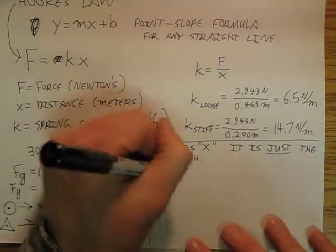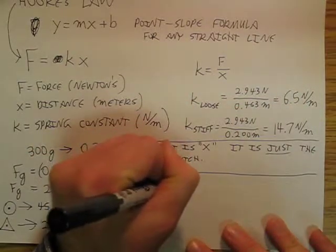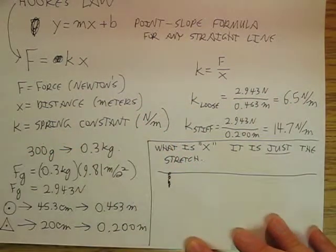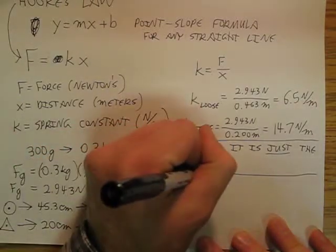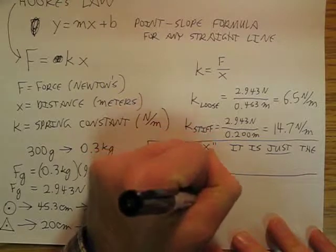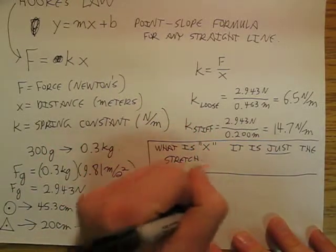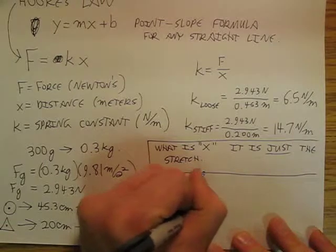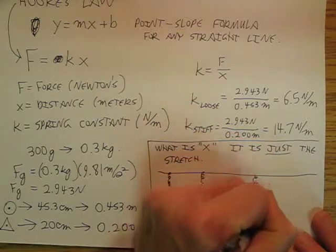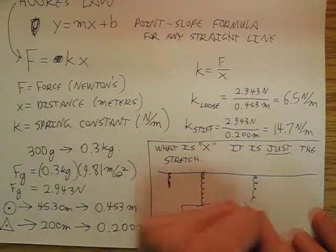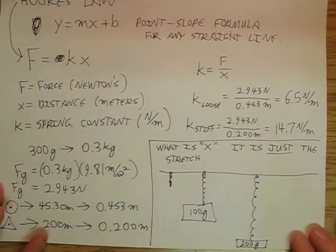So, suppose I have a situation, and I've got a spring that's hanging with nothing on it. And then I have another spring. Well, I have the same spring, but the same spring now has a 100-gram mass on it. And then I've got the same spring again, and the same spring again has a 200-gram mass on it.